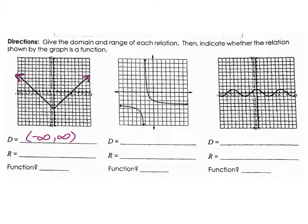And then our range, that was how far below the x-axis to how far above, and that was going to be from negative 5 to infinity. And this does pass the vertical line test. Notice that it only intersects our graph at most once. So, is this a function? Yes, this is a function.